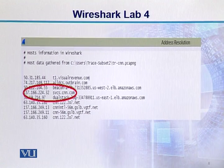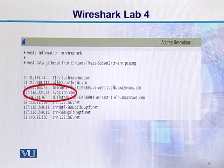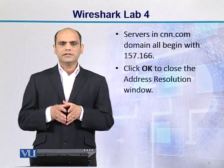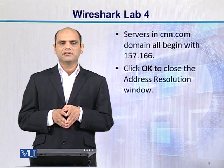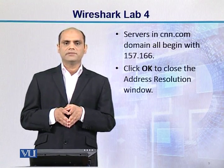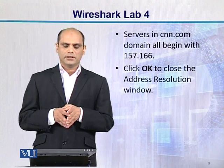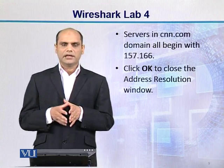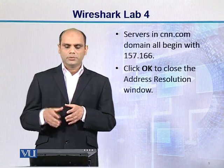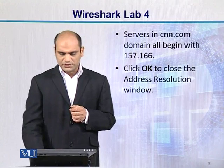Is mein jo CNN ke jo servers hain, unke jo IP addresses hain, woh dikhaye gaye hain. IP address pehle hai, aur doosre column mein machine ki ID hai. For example, 157.166.224.32 — ye cnn ke servers hain. Is trace file mein CNN ke servers ke IP addresses 157.166 aur 106 se shuru ho rahe hain. Uske baad click OK karein taaki us address resolution window ko close kar diya jaaye.